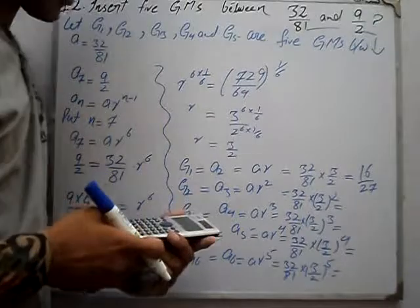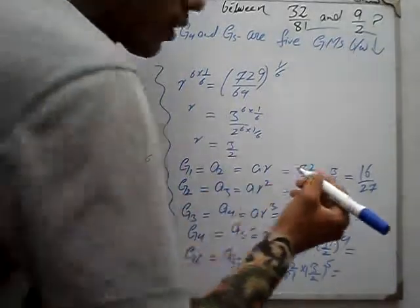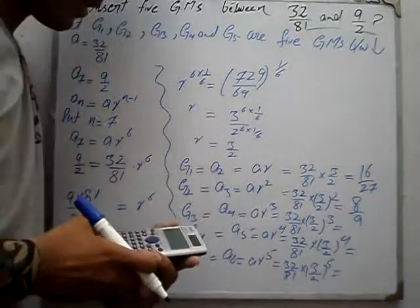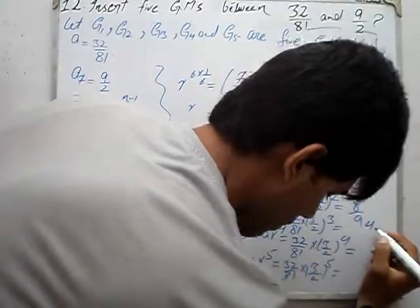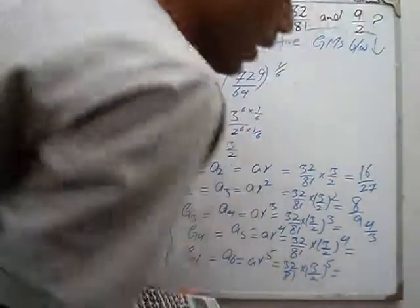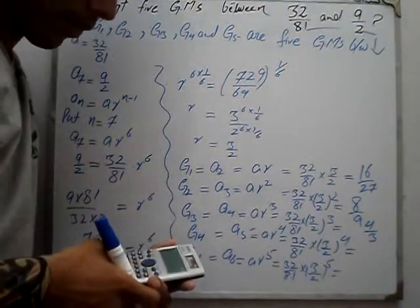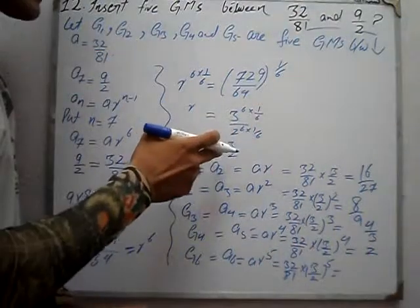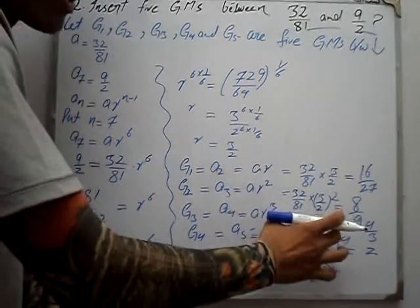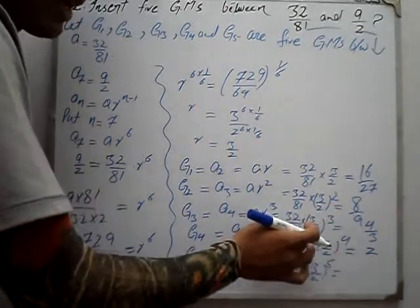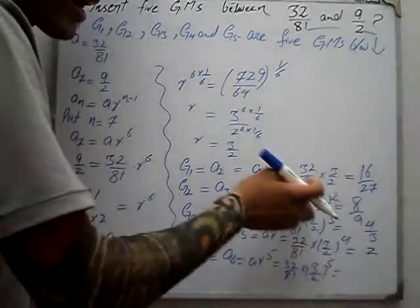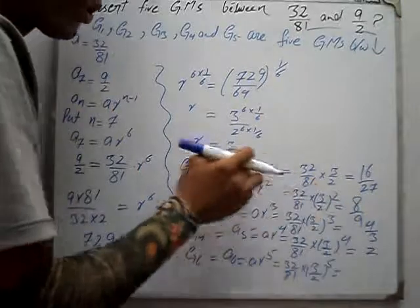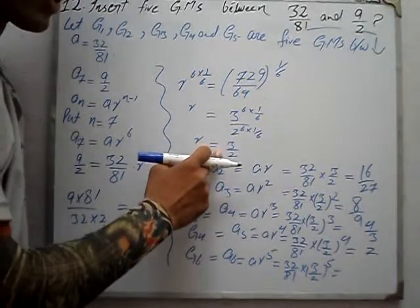Continuing to solve for the remaining geometric means: G2 is equal to 8 over 9, and G3 is equal to 4 over 3, G4 is 2, and G5 is 3 over 2.